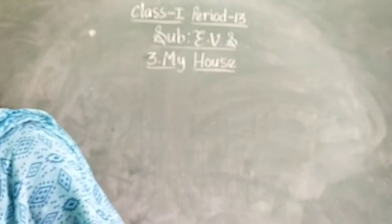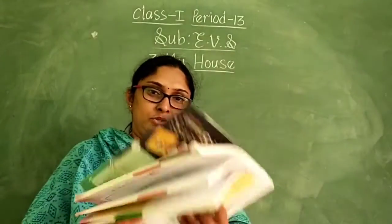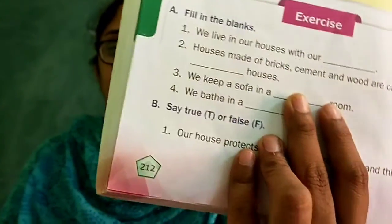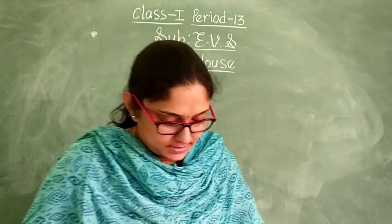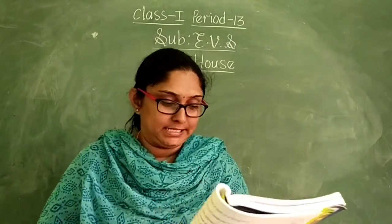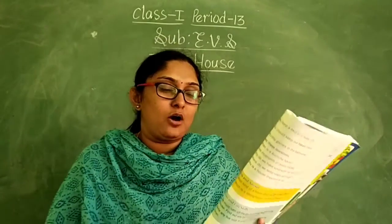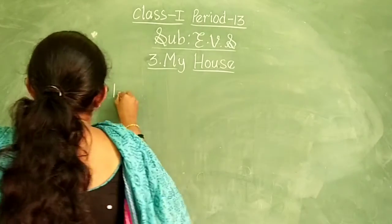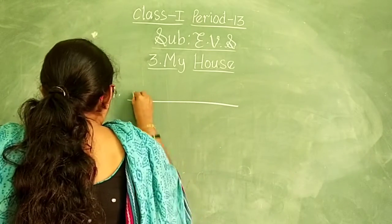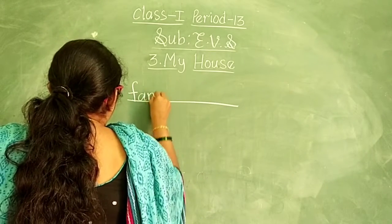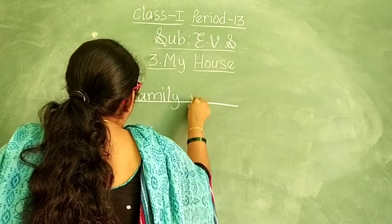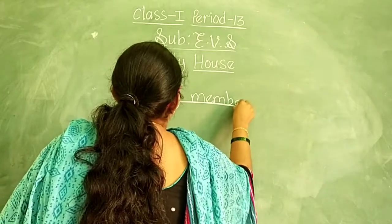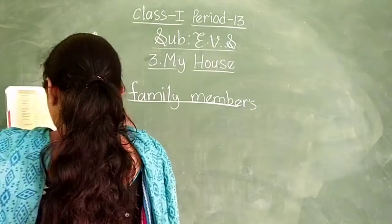Everyone open your semester book to page number 212. Here, fill in the blanks. We live in our house with our family members — F-A-M-I-L-Y M-E-M-B-E-R-S. Next: houses made up of bricks, cement and wood are called pakka houses.